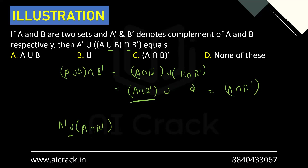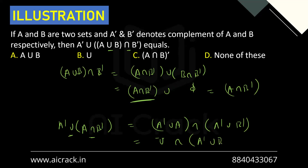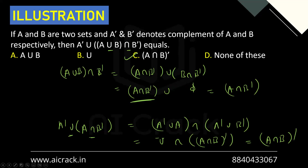We know that B intersection B dash is nothing but phi. So that term becomes phi, leaving us with A intersection B dash. Now we have simplified to A dash union (A intersection B dash). A dash union A is nothing but the universal set. By De Morgan's law we can write A dash union B dash. Since anything intersecting with the universal set gives that set itself, we get A intersection B dash. So the answer is C, which is A intersection B dash.